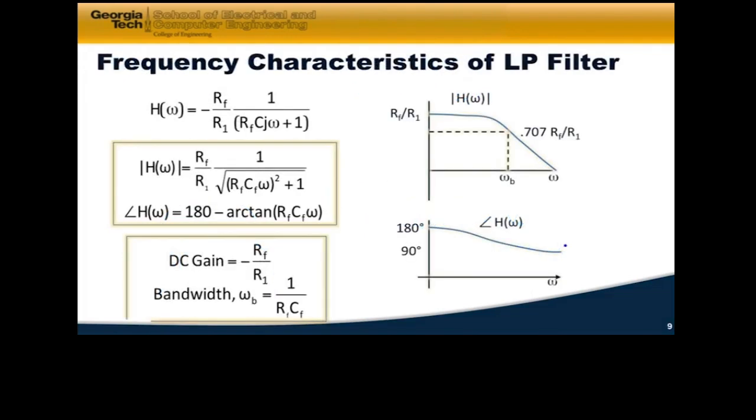Let's look at the frequency characteristics of a low pass filter. This is the transfer function right here. And if I calculate the magnitude and the angle I get this. So the magnitude is I just take in the denominator the sum of the squares of the real part and the imaginary part and then take the square root of that. And then the angle notice that I've got a minus sign right there so the angle starts out at 180 degrees. And then I subtract off the angle of the denominator.